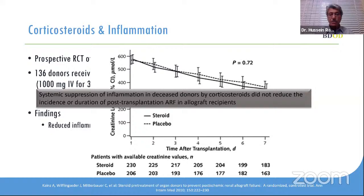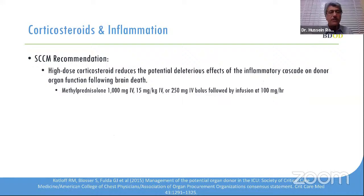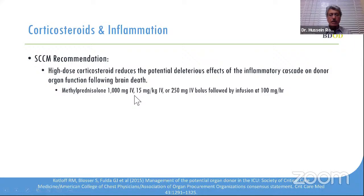The Society of Critical Care Medicine recommends high-dose steroids to reduce the potential deleterious effects of brain death. The recommendation is to use one gram of methylprednisolone, or 15 mg/kg IV, or 250 mg IV bolus followed by infusion at 100 mg per hour. Different protocols exist — some give a large bolus, others a weight-based bolus, or a smaller bolus followed by infusion.